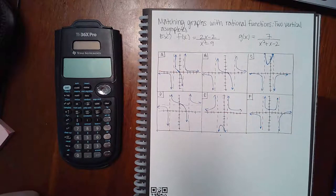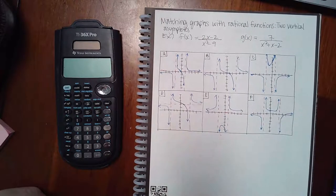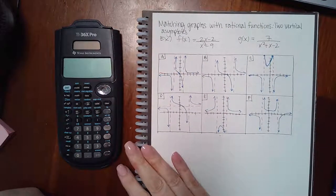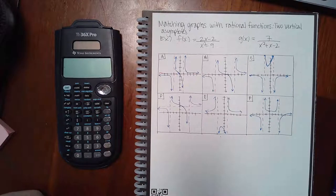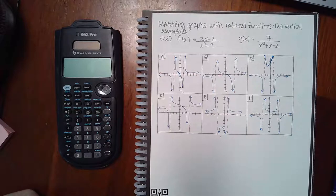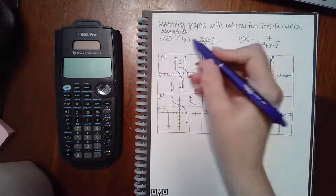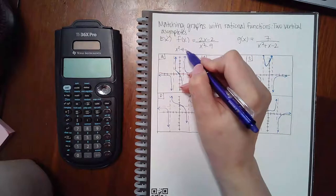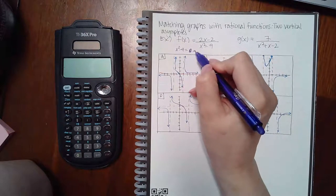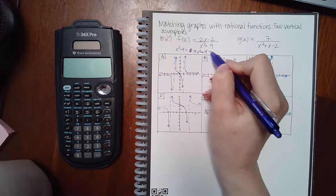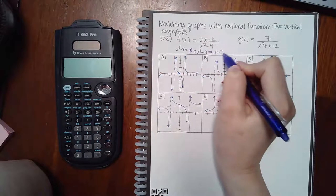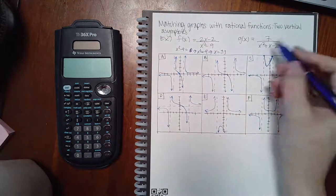In this video we're finishing up module 3.3, matching graphs with rational functions with two vertical asymptotes. Let's find the vertical asymptotes for each function.